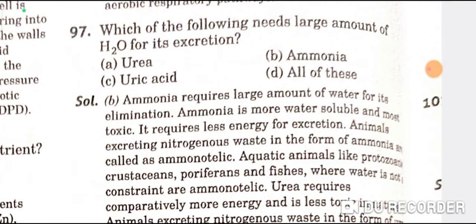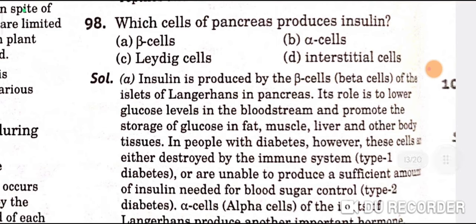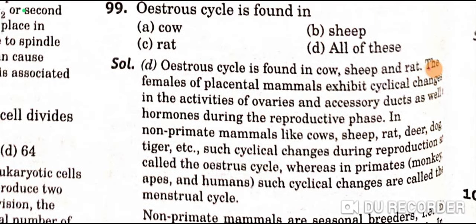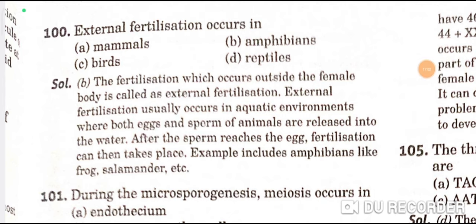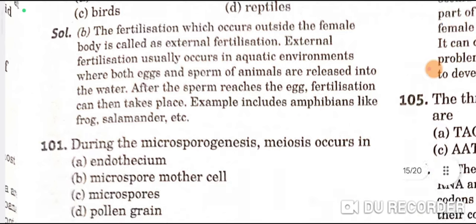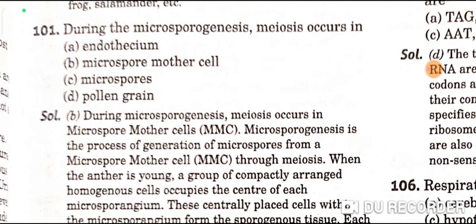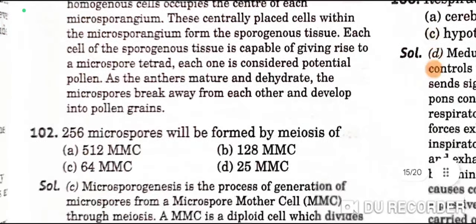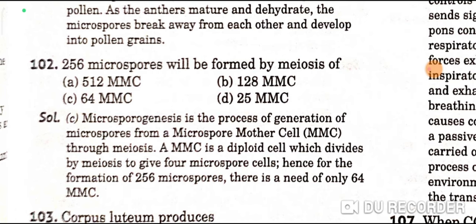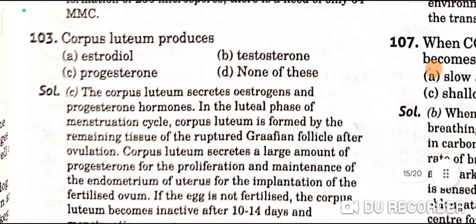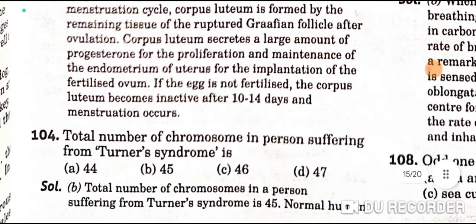Which substance needs the largest amount of water for its excretion? Ammonia — B is the correct option. Which cells of the pancreas produce insulin? Beta cells — A is the correct option. The estrous cycle is found in cows, sheep, and rats — D (all of these) is the correct option. External fertilization occurs in amphibians — B is the correct option. During microsporogenesis, meiosis occurs in the microspore mother cell. 256 microspores are formed by meiosis of 64 MMC — C is the correct option.